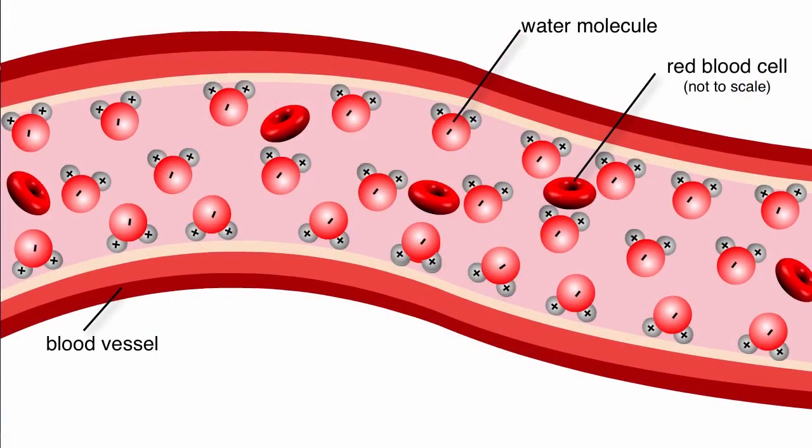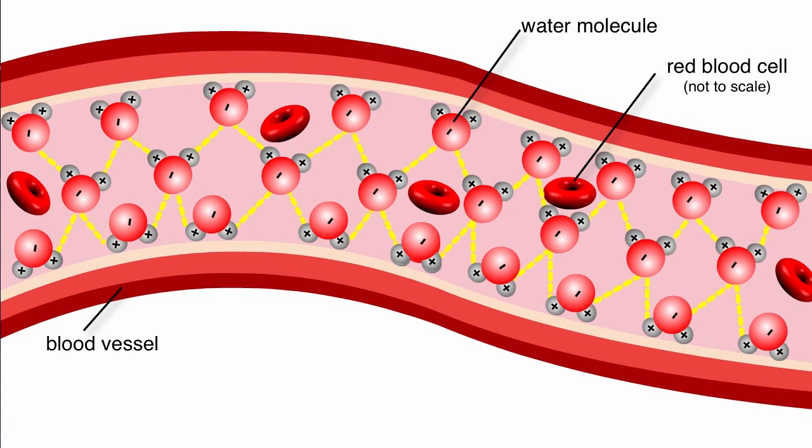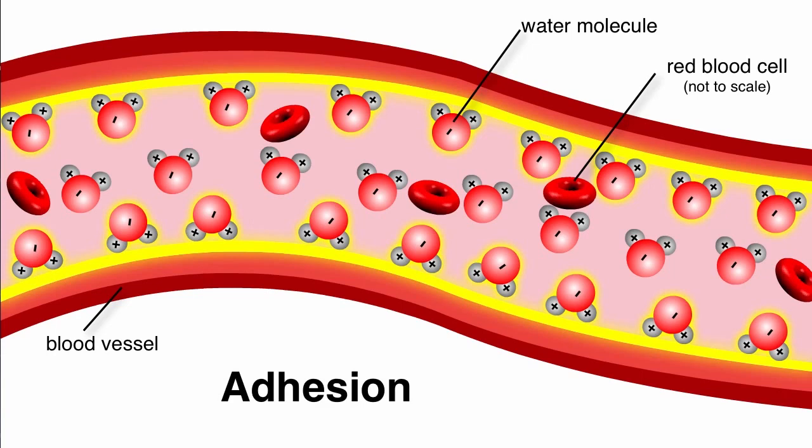Water molecules are also cohesive and adhesive. The hydrogen bonds in water cause water molecules to stick together, a property known as cohesion. Polar bonds also give molecules an adhesive property, or the ability to cling to other polar surfaces.